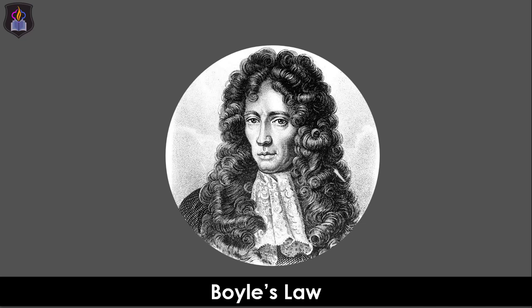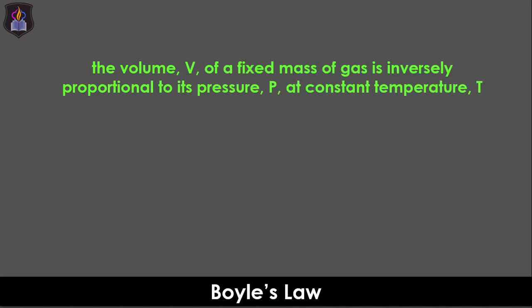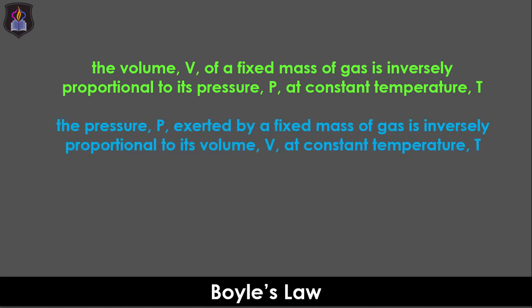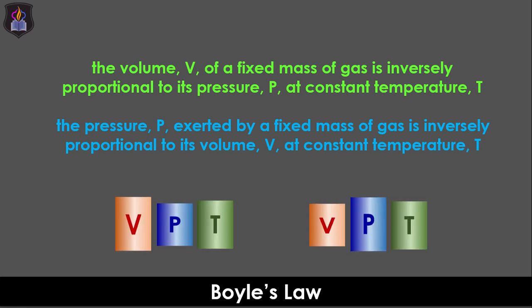Robert Boyle proposed the law that shows the relationship between the volume and pressure of the gas and states that the volume V of the fixed mass of gas is inversely proportional to its pressure P at constant temperature, or the pressure P exerted by a fixed mass of gas is inversely proportional to its volume V at constant temperature. This means that provided the temperature remains constant, if the pressure of the gas is doubled, its volume will be halved and vice versa.